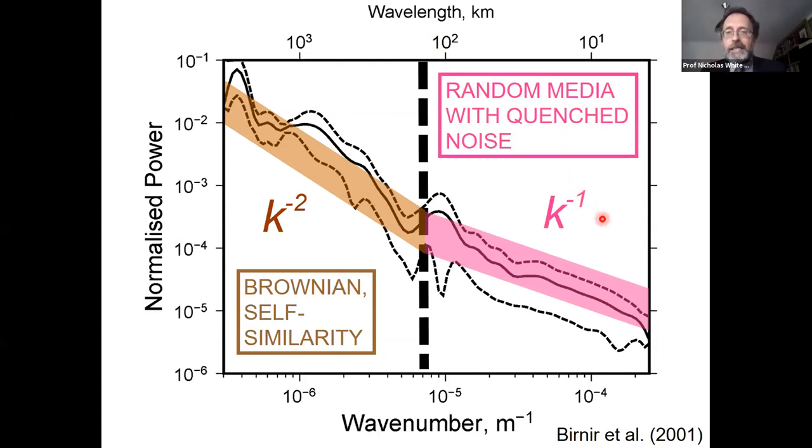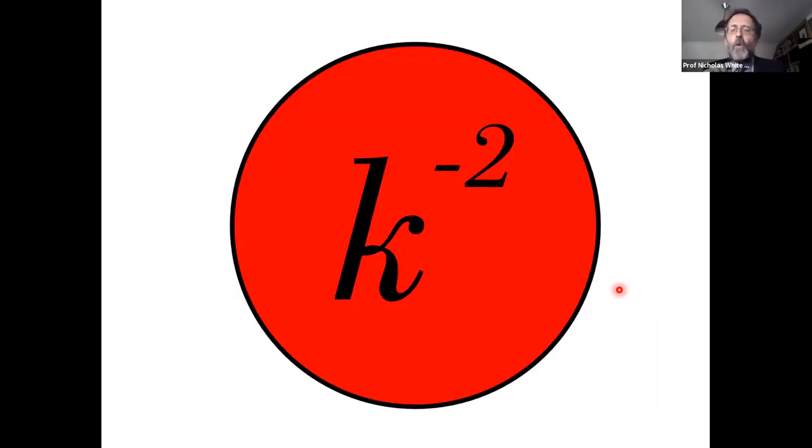This is where you have self-similarity: amplitude and wavelength scale together. As you get to wavelengths of about 100 kilometers or less, there's a change in slope, and it becomes pink, k to the minus one. I'm not going to explain what this dreadful phrase means. I'll blame it on Burner et al., a great paper but quite difficult.